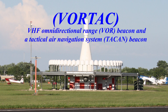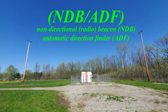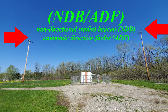The VORTAC tells us where we are in relation to the VOR, as well as how far away from the VOR we are. Another system is the NDB, or non-directional beacon. They look like this.